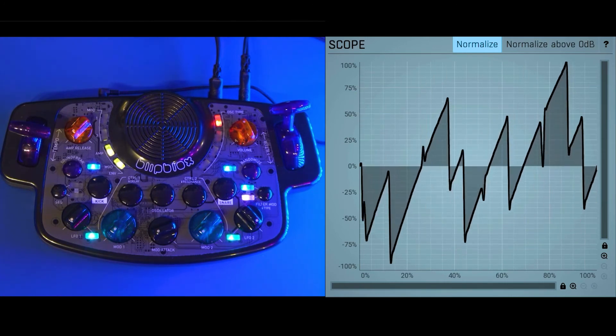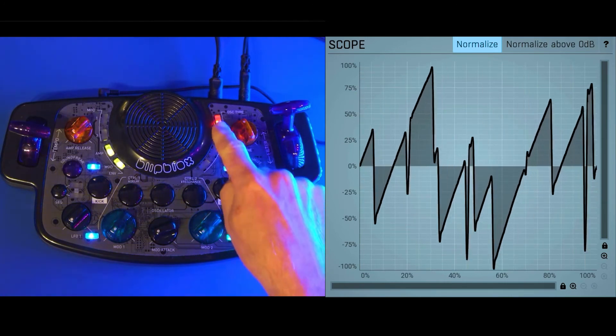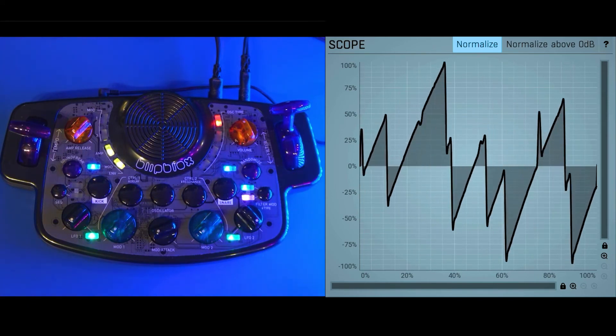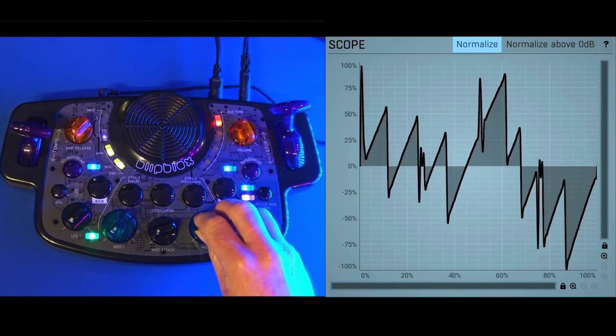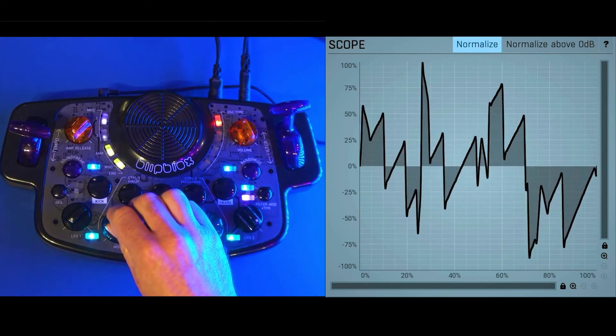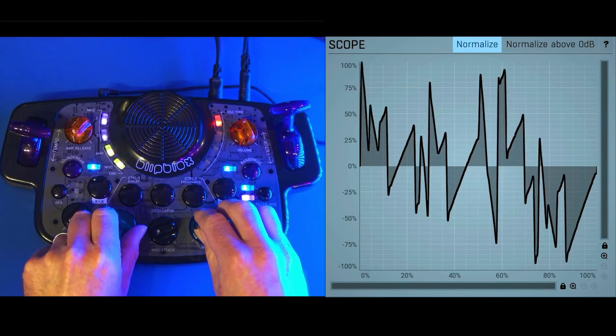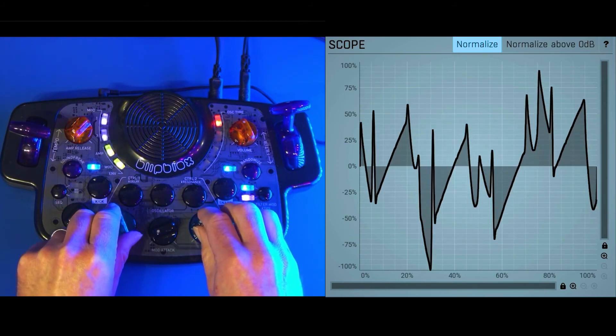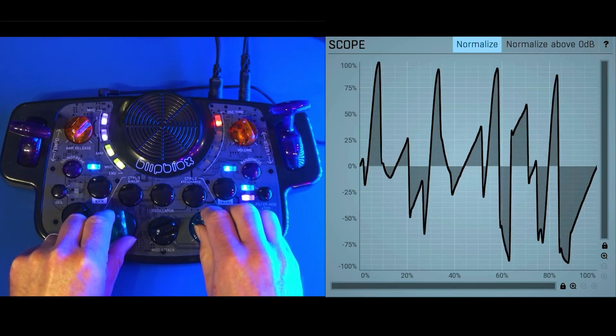You know, this is an example of, I believe on this Red 1 oscillator type, there's just a lot going on here. This is sort of like our base oscillator type for the After Dark. It's just such a nice big full sound. And on this waveform, you can really see that.